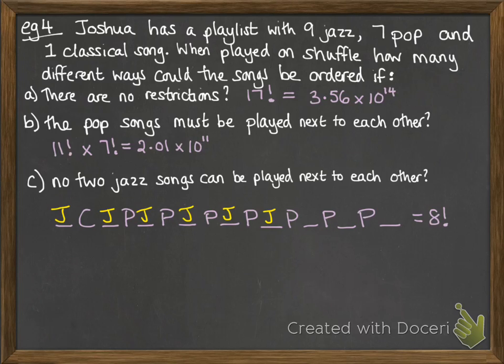If we spread out the classical and the pop songs with some spaces in between, that gives us 8 items there. They could be arranged in 8 factorial ways with spaces left in between to fill in with the jazz songs. Now there are 9 spaces and there are 9 songs, so we're just going to slot all of those jazz songs in there, and they could be arranged in 9 factorial ways. So then we can find our final answer of 1.46 times 10 to the power of 10.